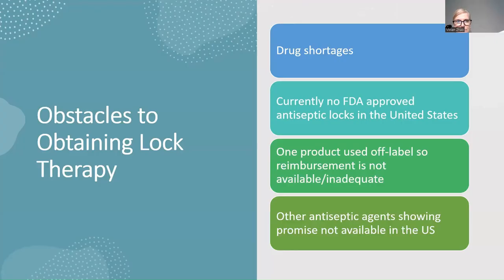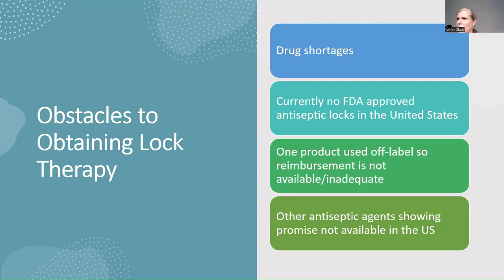Obstacles to obtaining locks: one manufacturer now holds the rights to ethanol, so previously a vial might cost $30–40, but it's now $500 for one vial. That makes it cost-prohibitive to provide patients with ethanol locks — very few people are able to obtain it currently.